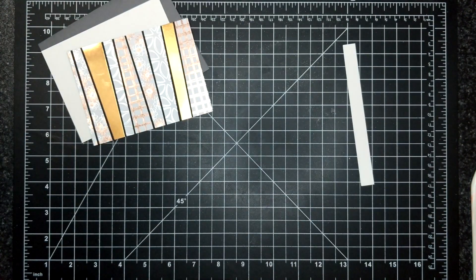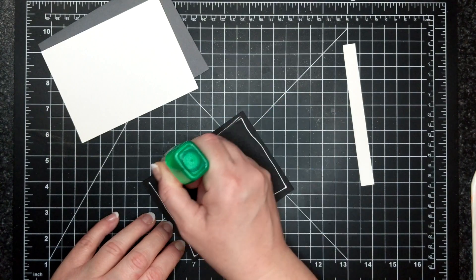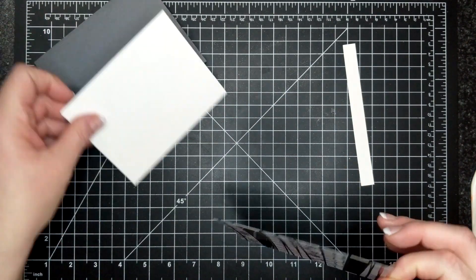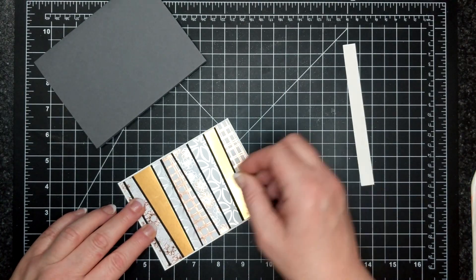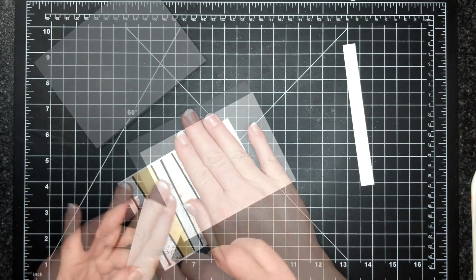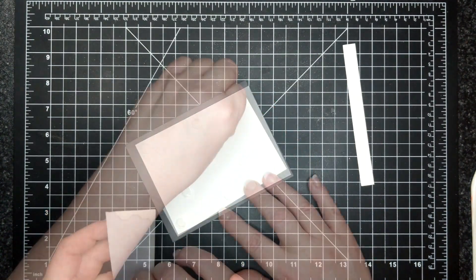Once I cleaned up my little station here I cut that piece down to three and three quarters by five inches and I'm gluing it to a whisper white mat. Then I'm going to pop that up with my Stampin' dimensionals and put it on my basic gray card base.